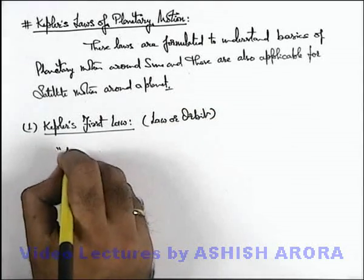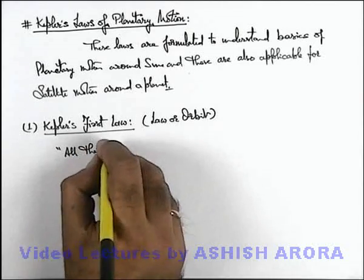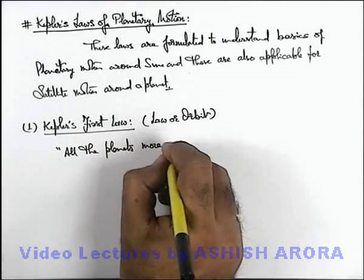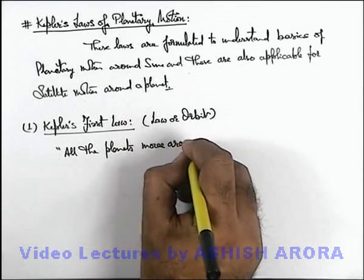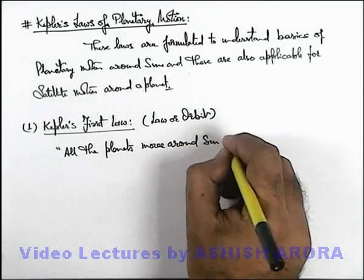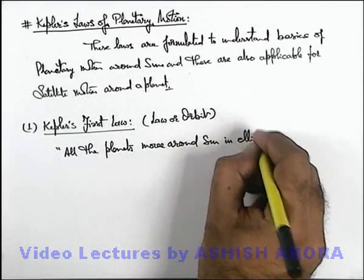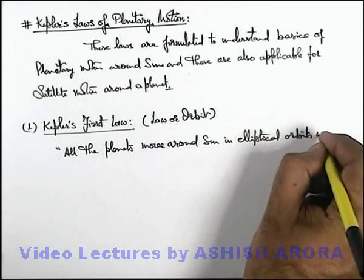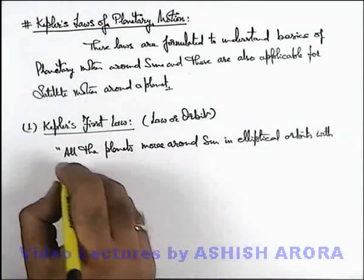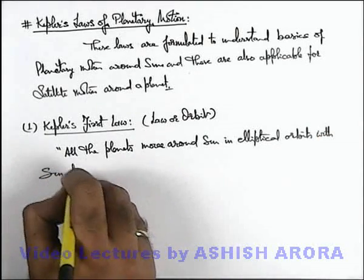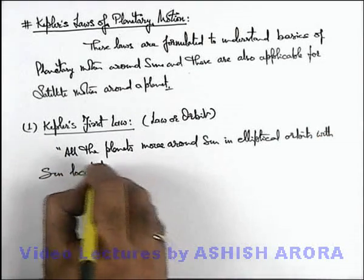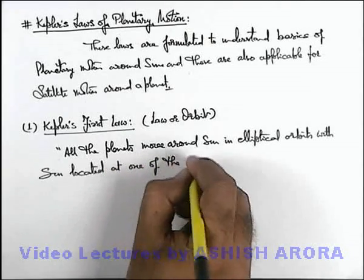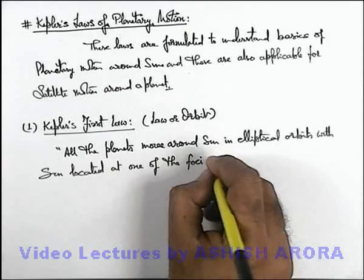And this law states that all the planets move around the sun in elliptical orbits, with the sun located at one of the foci of the ellipse.